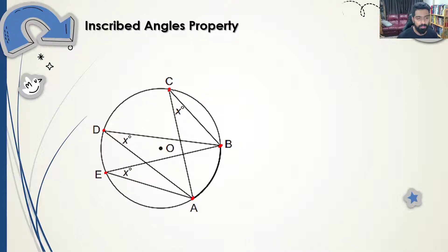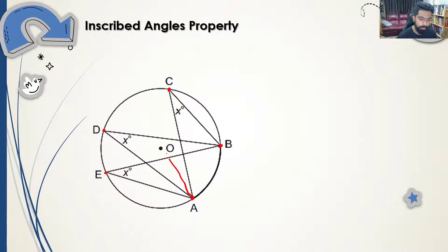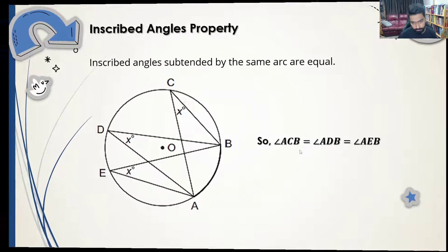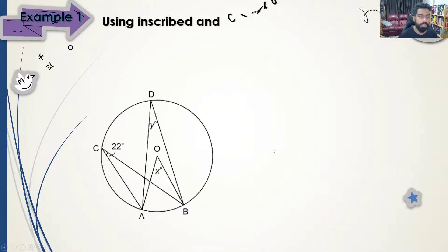For a second inscribed angle, it also starts at A, touches the circle at point C, and comes back to B. All inscribed angles subtended by the same arc will have the same measure. For example, if angle x equals 20 degrees, all inscribed angles subtended by that same arc will also be 20 degrees.